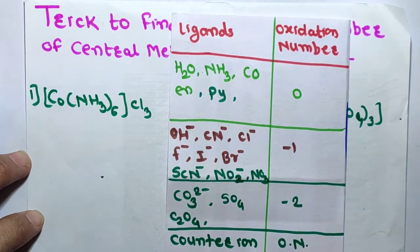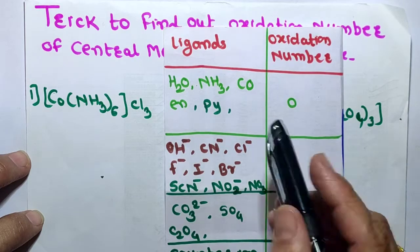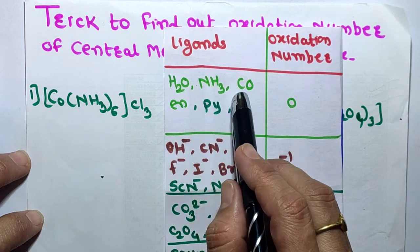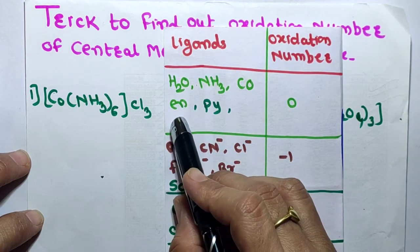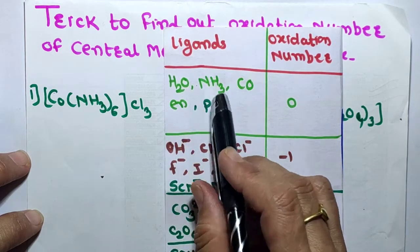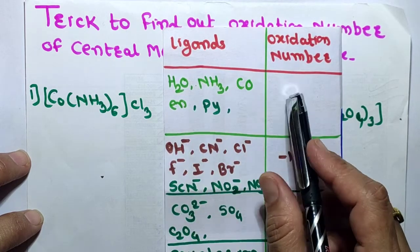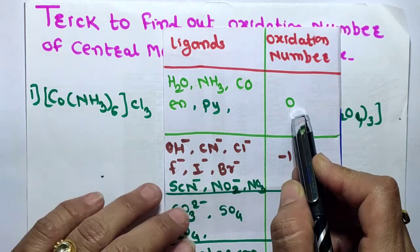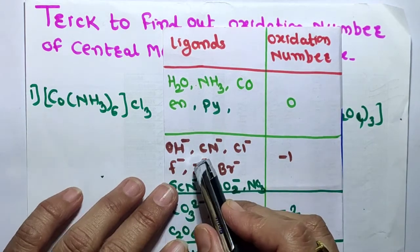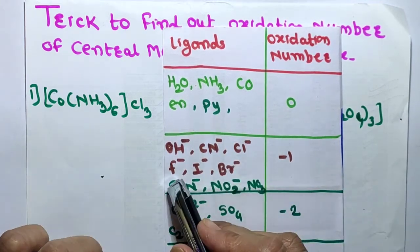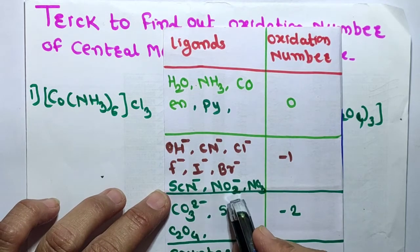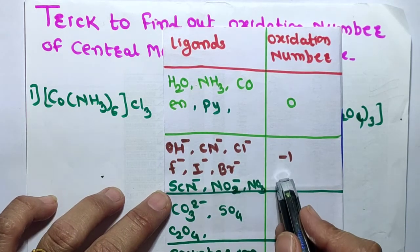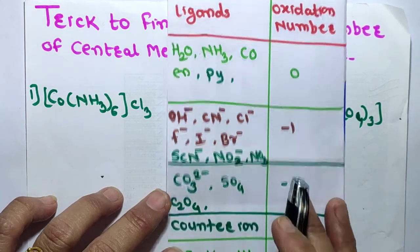Here are some ligands and counter ions with known oxidation numbers. H2O, NH3, CO, ethylenediamine (EN), and pyridine are neutral field ligands having oxidation number zero. OH⁻, CN⁻, Cl⁻, F⁻, I⁻, Br⁻, thiocyanate, NO2⁻, and NO3⁻ have oxidation number minus one.